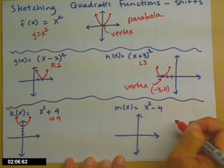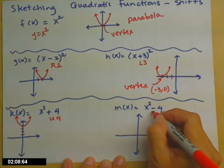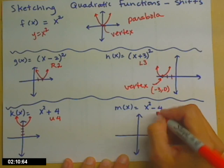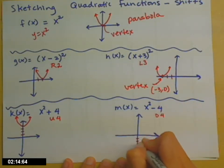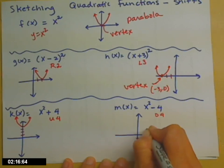Versus m(x) equals x squared minus 4. This time I have a minus 4 outside, so that's going to take that same parabola and move it down 4 spaces.